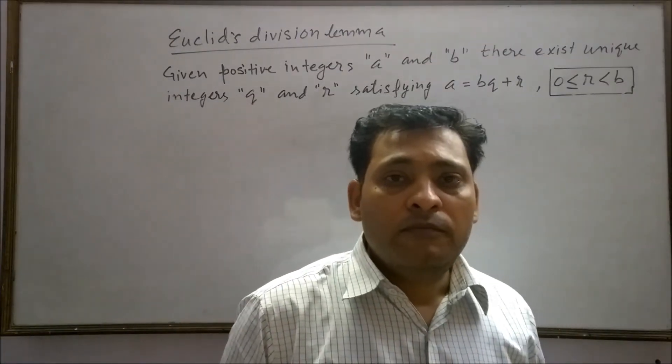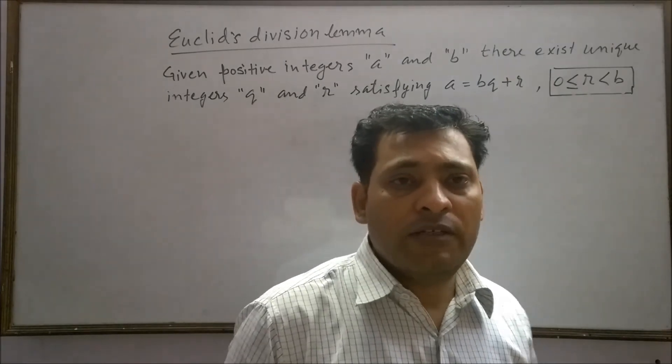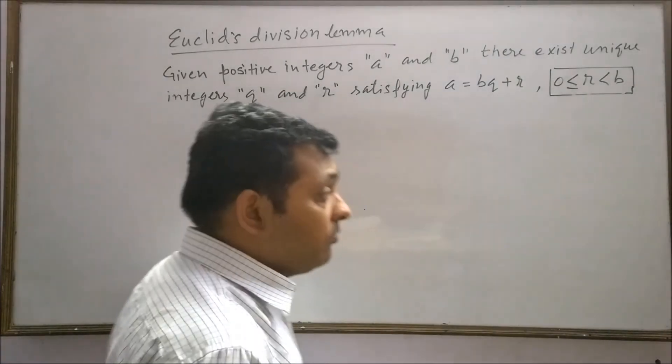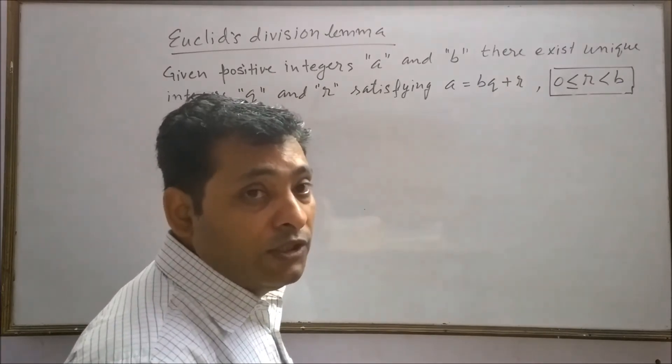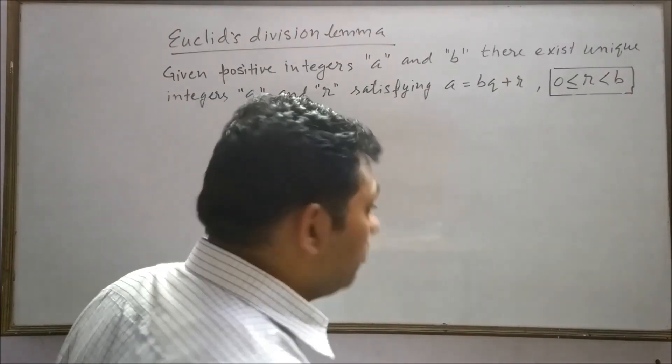Similarly, if we divide any positive integer by 5, then the possible remainders will be 0, 1, 2, 3 and 4, not 5, not more than 5.